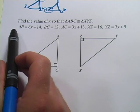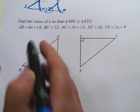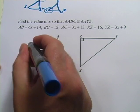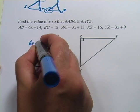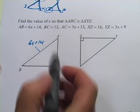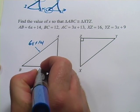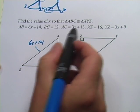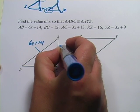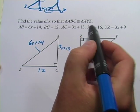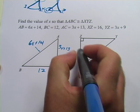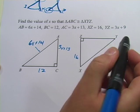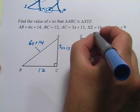It says AB equals 6x plus 14, so I'm going to label that here, 6x plus 14. And then BC equals 12. AC equals 3x plus 13. And XZ equals 16. And YZ equals 3x plus 9.